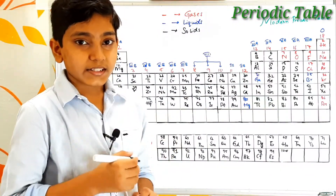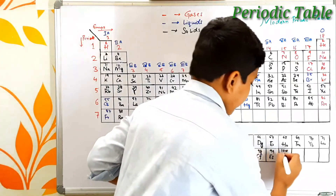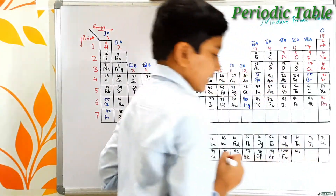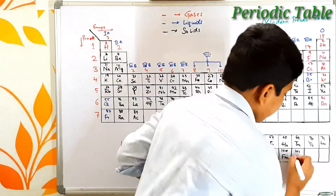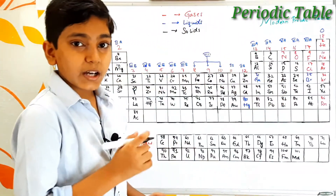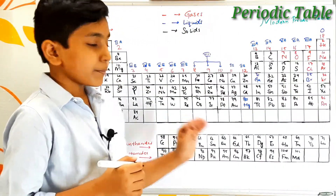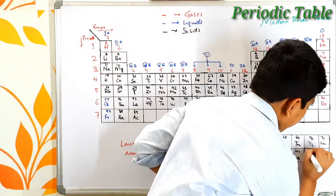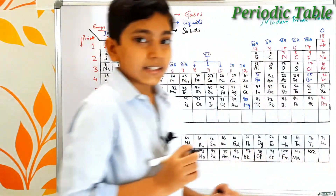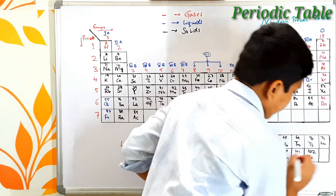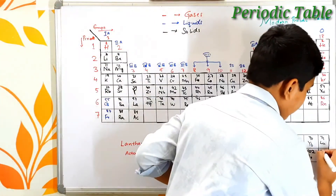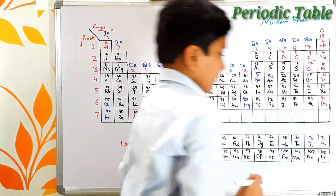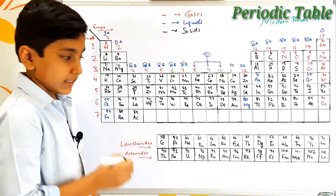Atomic number 100 is fermium — named after the scientist Fermi — its symbol is Fm. Atomic number 101 is mendelevium — its symbol is Md — named after the famous Russian chemist Mendeleev, whom we have already discussed in the history of the periodic table. Atomic number 102 is nobelium, and atomic number 103 is lawrencium — its symbol is Lr. These are the elements in the actinide series.